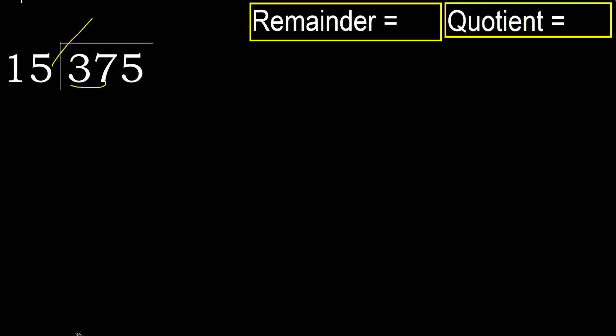15 multiplied by which number is nearest to 37, but not greater? 15 multiplied by 3 is 45 — that is greater. Multiplied by 2 is 30. 30 is not greater, ok. 37 minus 30 is 7. Next, bring down 5.